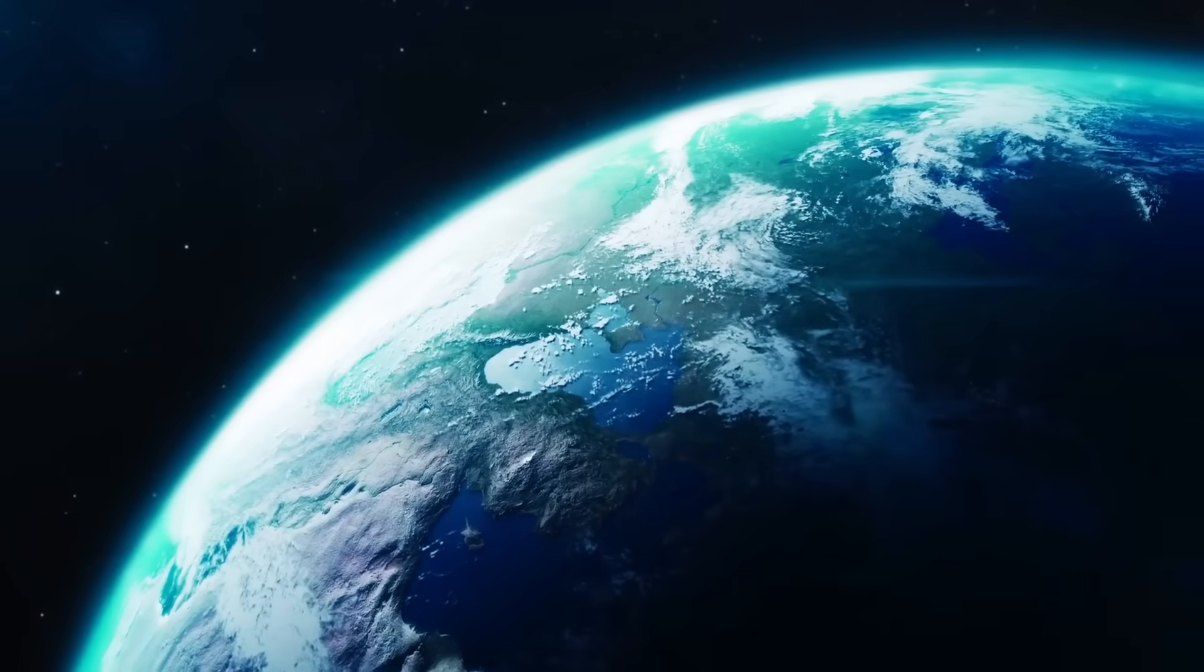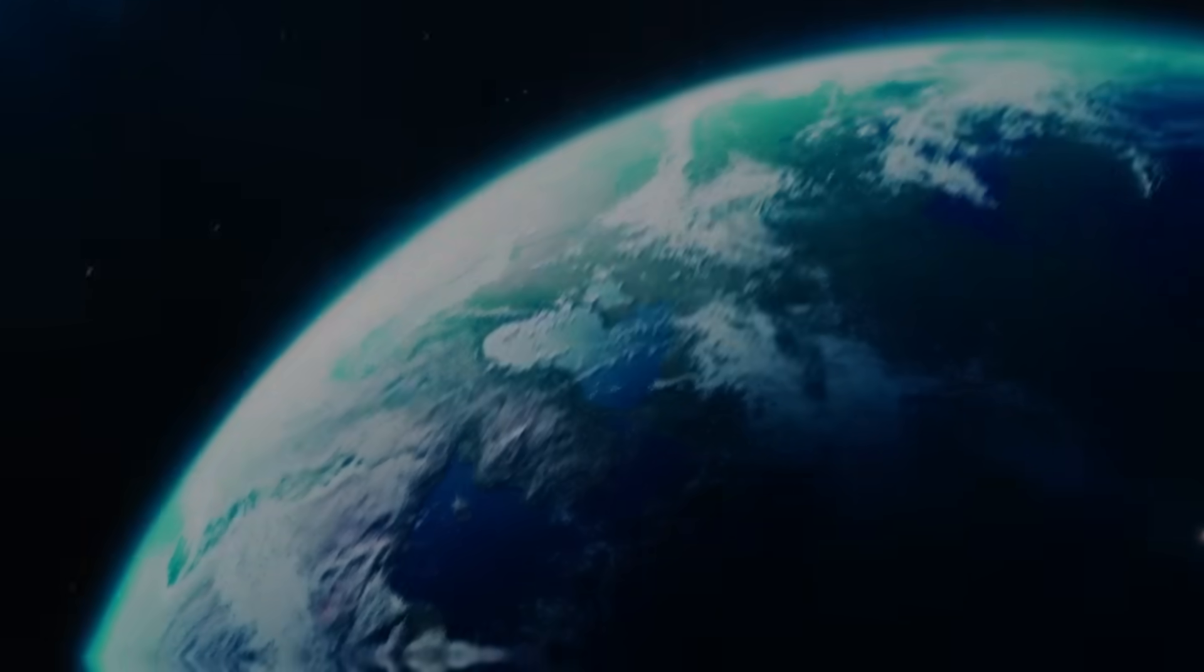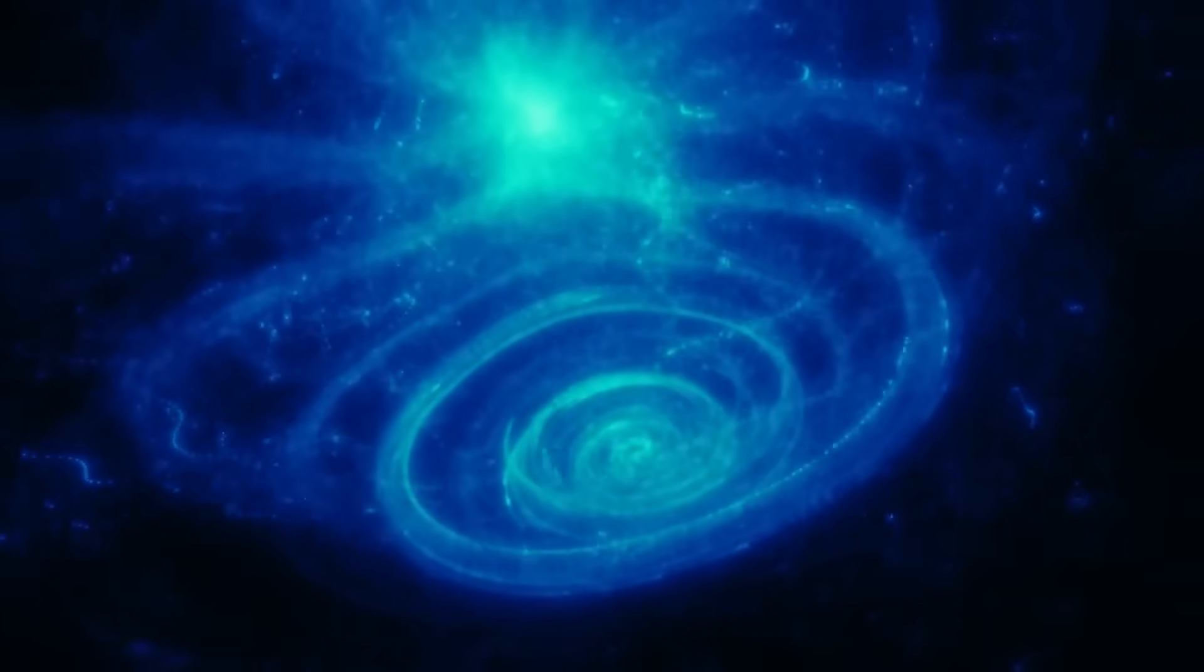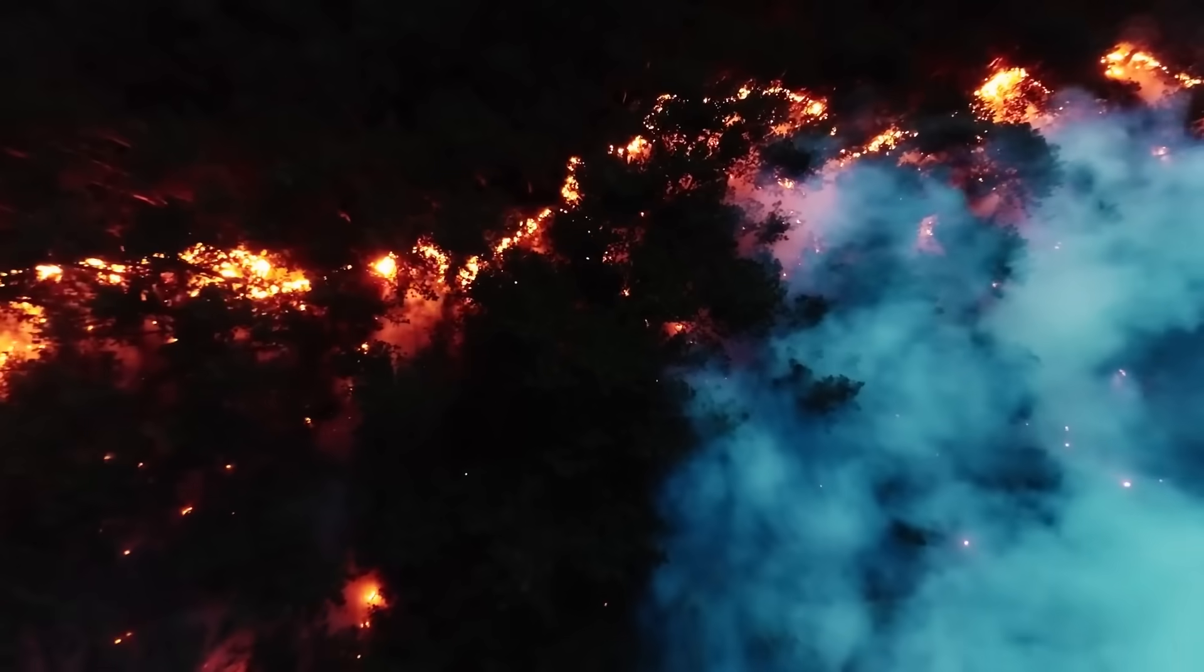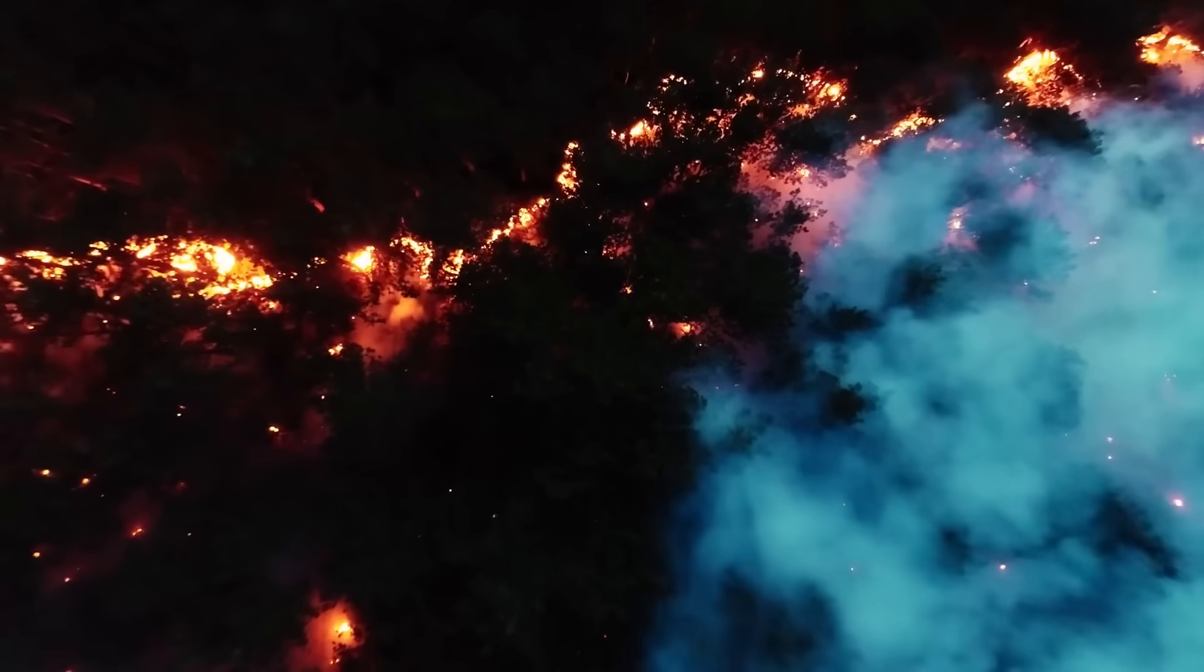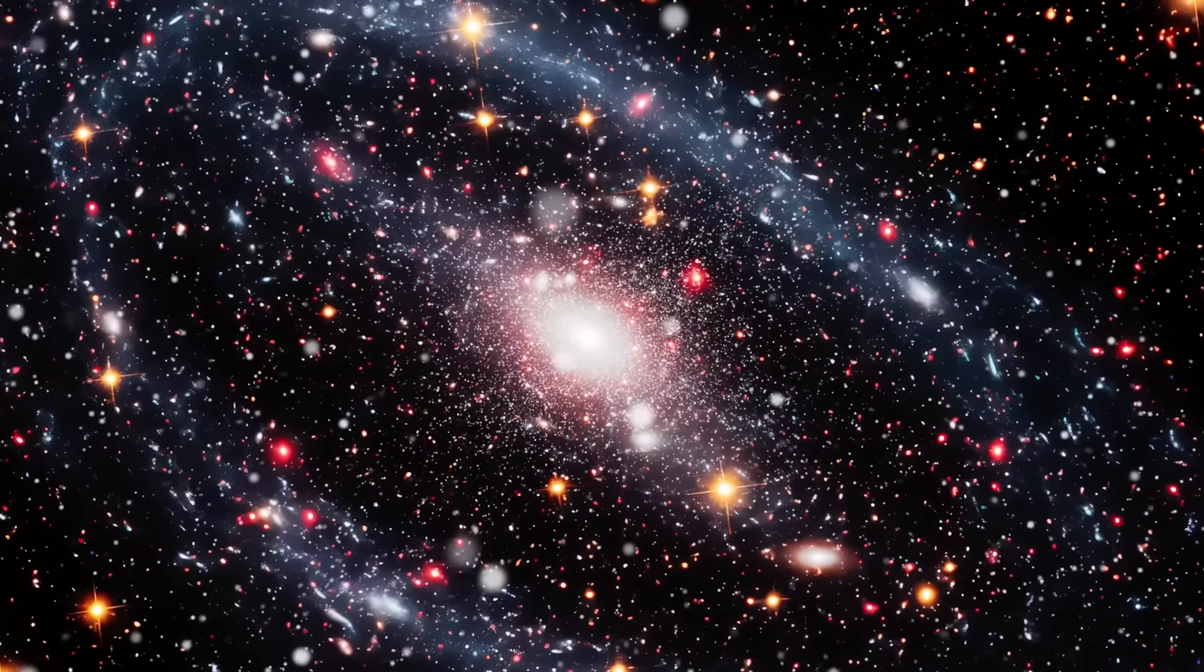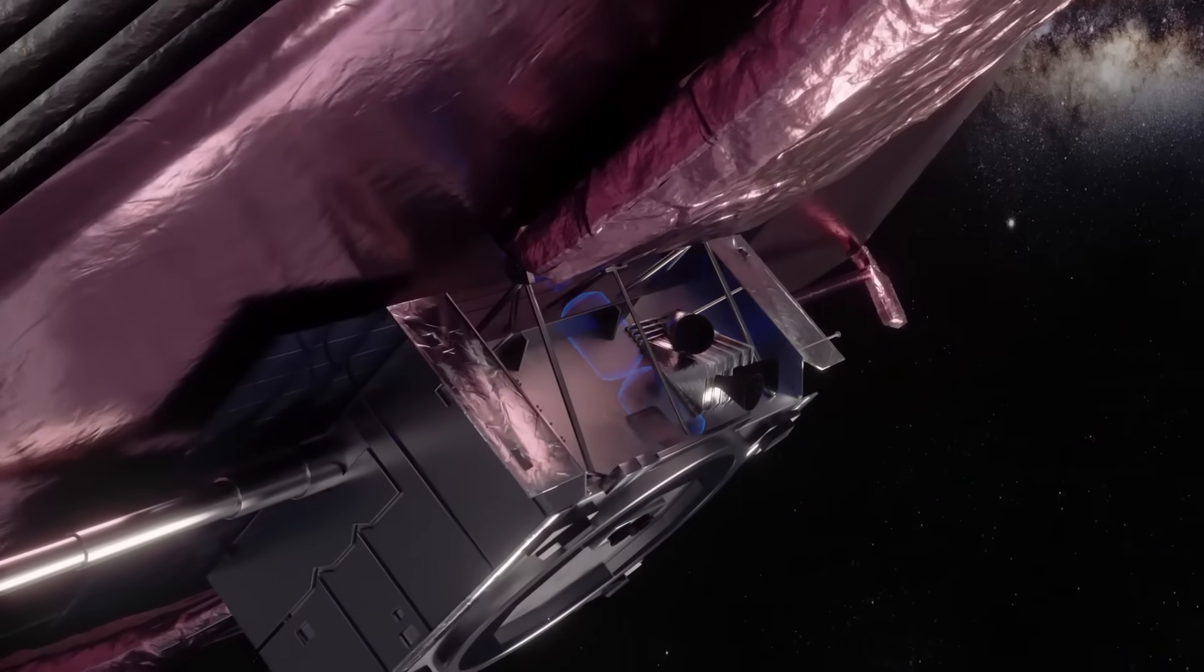More frightening than what it resembled was where it was located. The coordinates matched a cold spot in the cosmic microwave background, an area long thought to be a statistical anomaly, devoid of galaxies and stars. But now it looked more like a lock, a vault, a geometric construct encoded into the fabric of the universe itself. And if it's a vault, what's inside it?